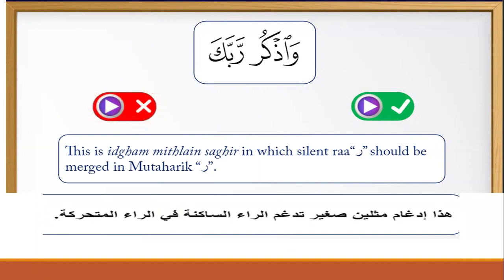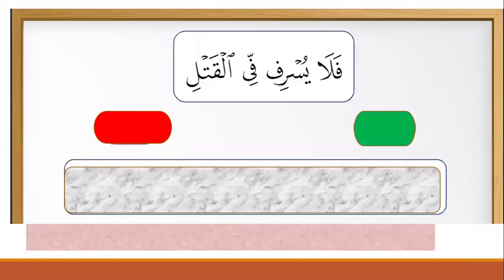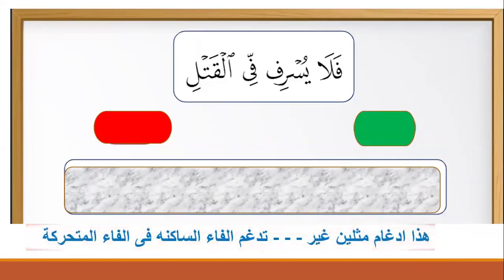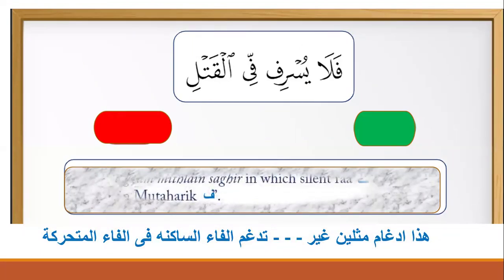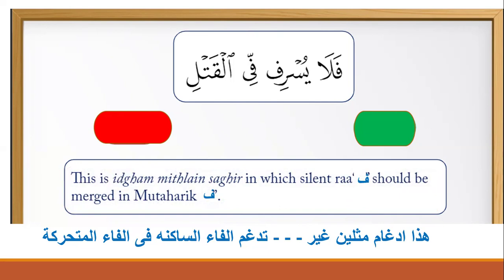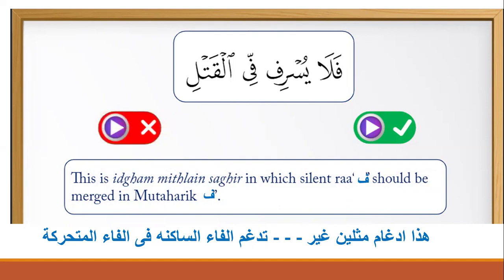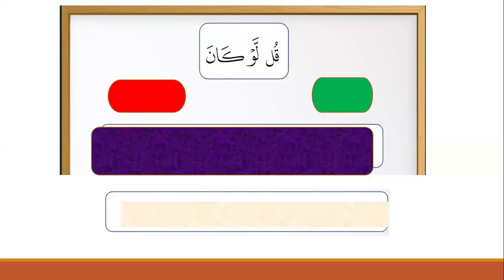The wrong pronunciation is وذكورا — no, that is incorrect. Now look at the next example: this is idgham mithlain saghir in which the silent fa should be merged into the mutaharrik fa. The correct pronunciation is فلا يسرف في القتل. The wrong is فلا يسرف فلا يسرف في القتل — you should make idgham, not izhhar.